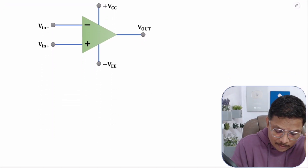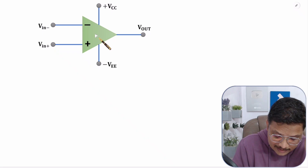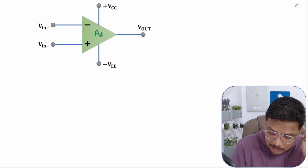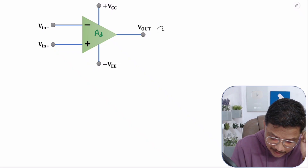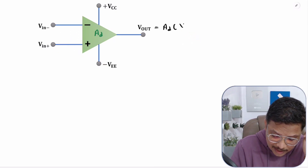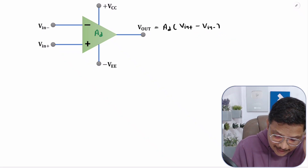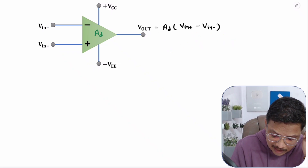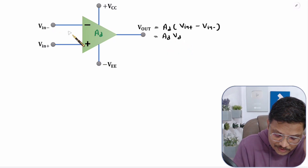Here, if you observe, we have an operational amplifier. If this operational amplifier is having gain AD, then what is my output? My output has to be this differential gain AD multiplied by the differential input, which is V in plus minus V in minus.